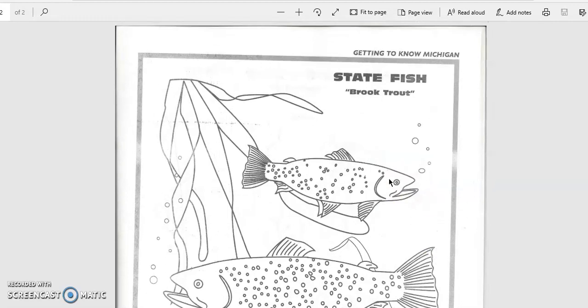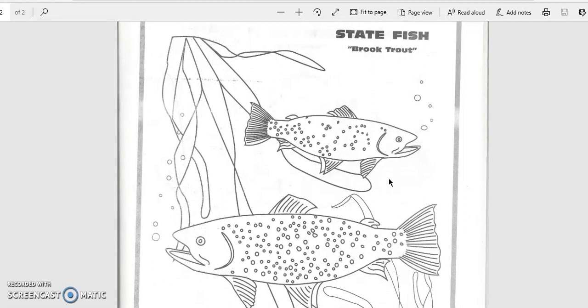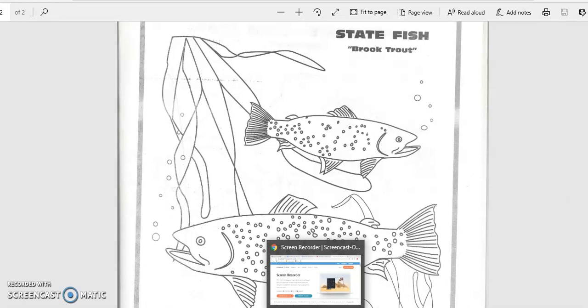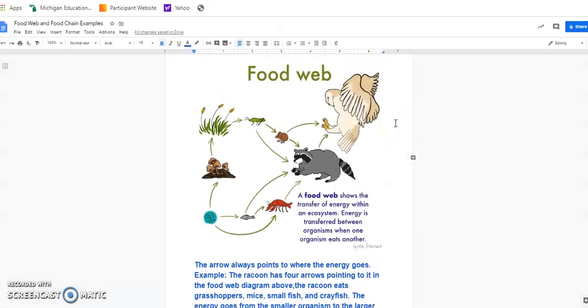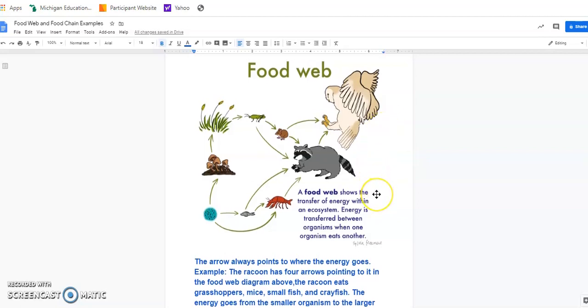So if you are tuning into this video for your science assignment about food chains and food webs, I am going to review what a food web and food chain is. So here is a diagram of a food web. A food web shows the transfer of energy within an ecosystem. Energy is transferred between organisms when one organism eats another.